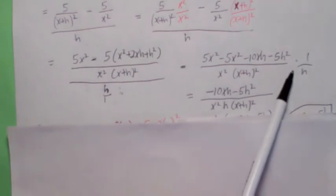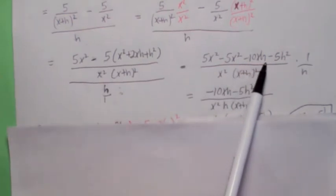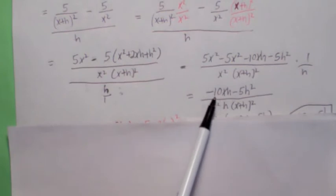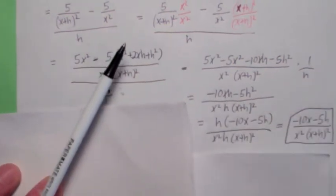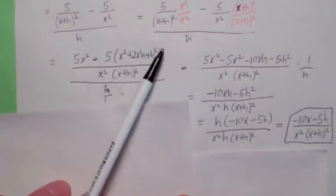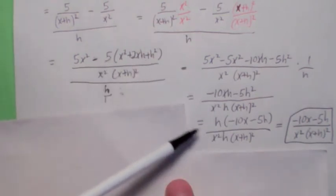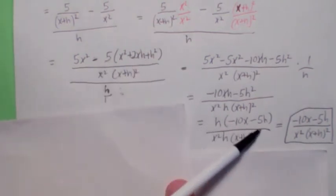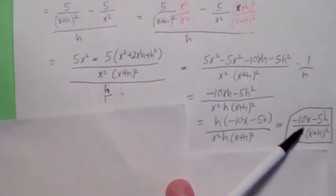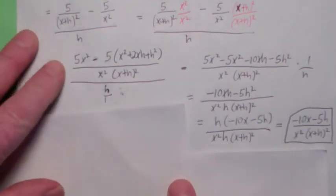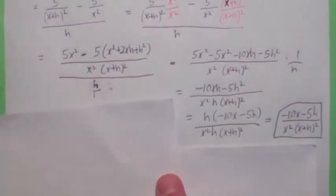Oh, by the way, the h is on the bottom, right? You have the negative 10xh minus 5h squared. You can actually factor an h out of the top of this, and you end up with h times this quantity. The h cancels with the h on the bottom. Your final answer is going to be negative 10x minus 5h over x squared times the quantity (x+h) squared. Nice, huh?